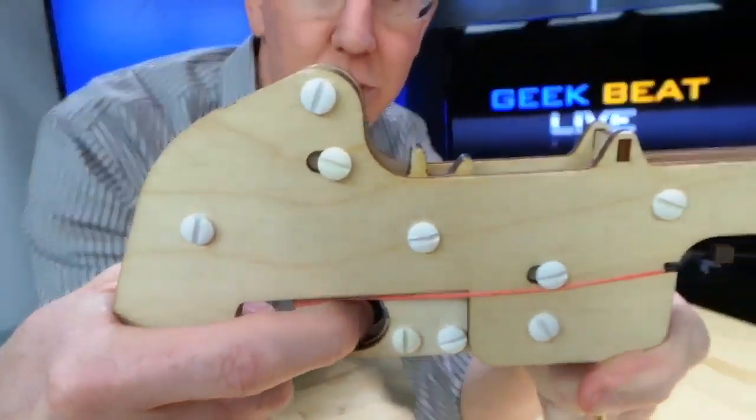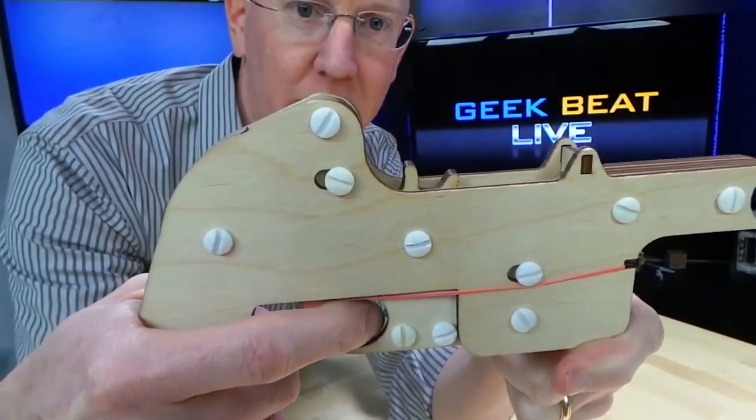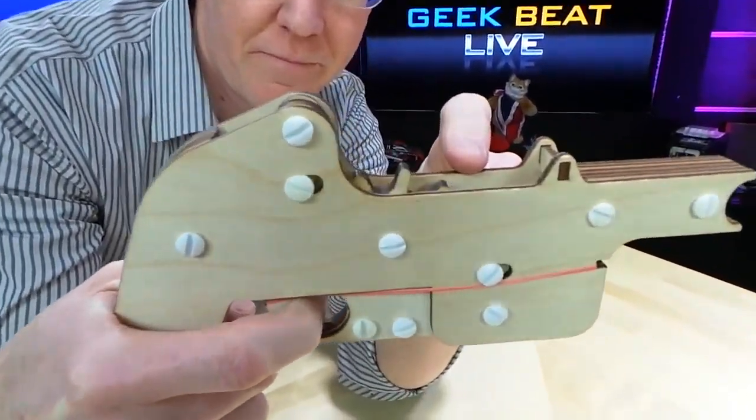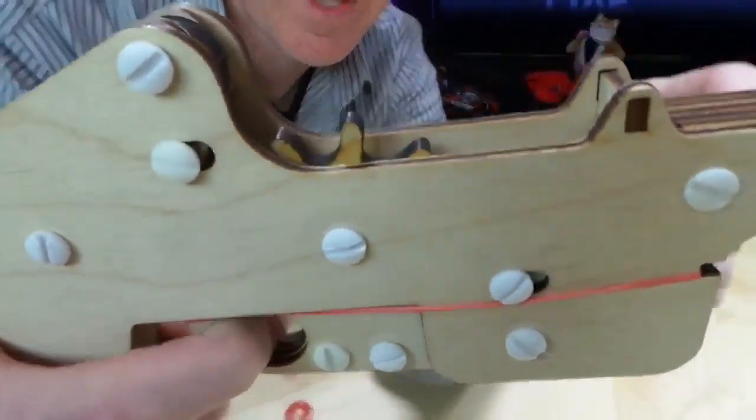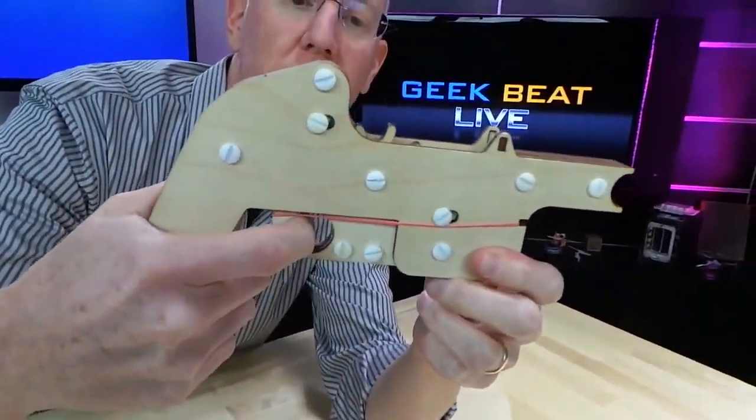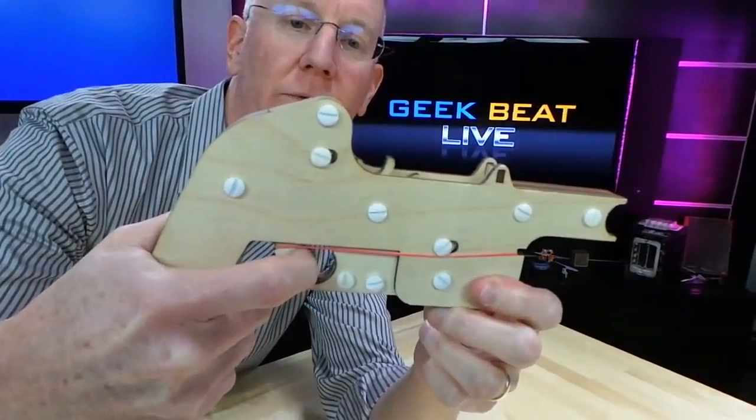You can see the action. It's really nice when you squeeze the trigger, the little piece right here comes forward. And there's a couple of rubber bands just kind of providing some friction to pull the trigger back whenever you do it.